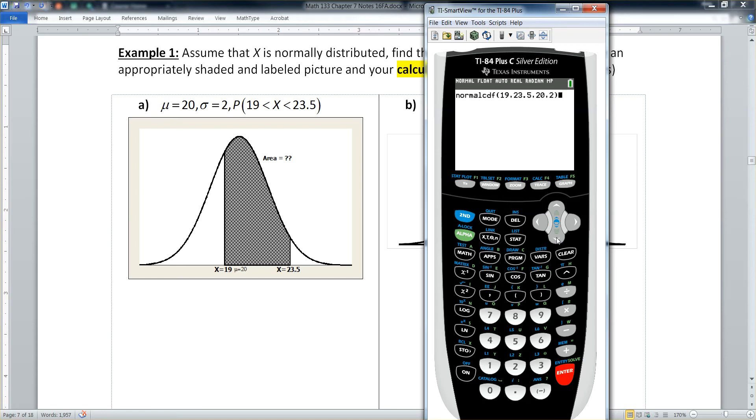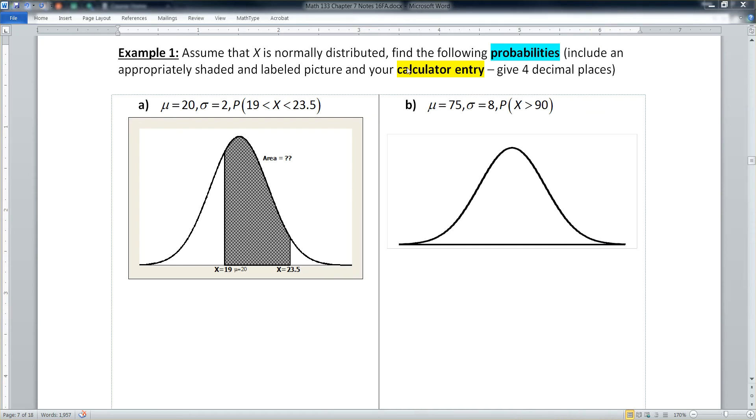Right. With the distribution menu, just like with the binomials, it actually pastes this value in just in case you wanted to do something else with it. But we just want to find it. We don't really want to do anything with this. So to tell the calculator to run this, I'm just going to press enter again. And there it is. And that is what I type in for my work because it says to show the calculator entry right there, calculator entry. So I'm going to type in that calculator entry and rounding to four decimal places. That area was about 0.6514.